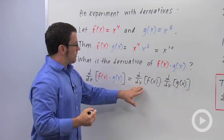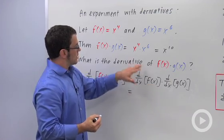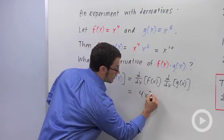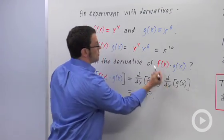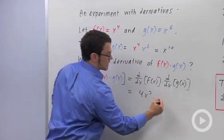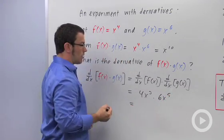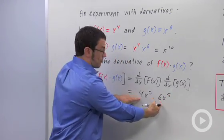And that would give you, well, the derivative of f of x would be the derivative of x to the fourth, and that's 4x cubed. And the derivative of g of x is the derivative of x to the sixth, which is 6x to the fifth. And multiplying that out, I get 24x to the eighth.